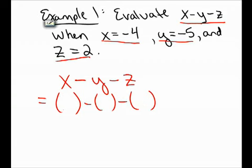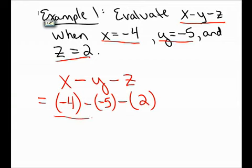Inside the first set of parentheses, I need to place the value of x, so that is negative 4. Inside the second set of parentheses, I put the value of y, which is negative 5. And inside the third set of parentheses, I put the value of z, which is 2.